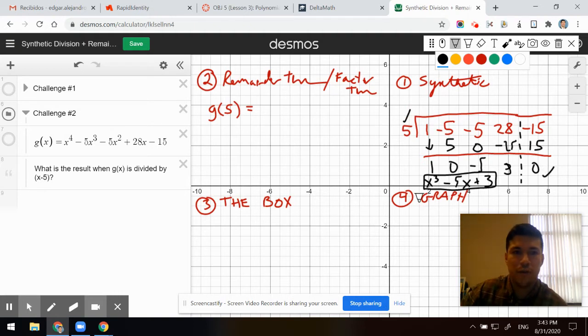So check it with the remainder theorem with an evaluation. 5 to the 4th power minus 5 times 5 to the 3rd power minus 5 times 5 squared. That's supposed to be a 2.